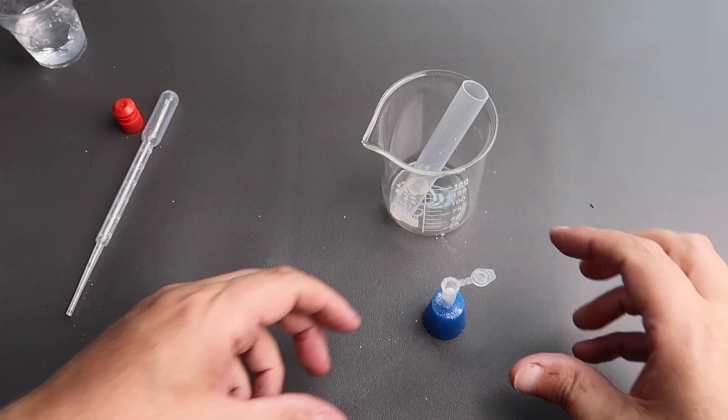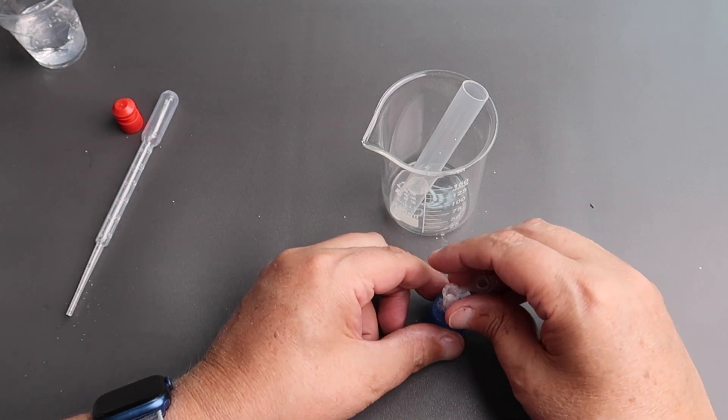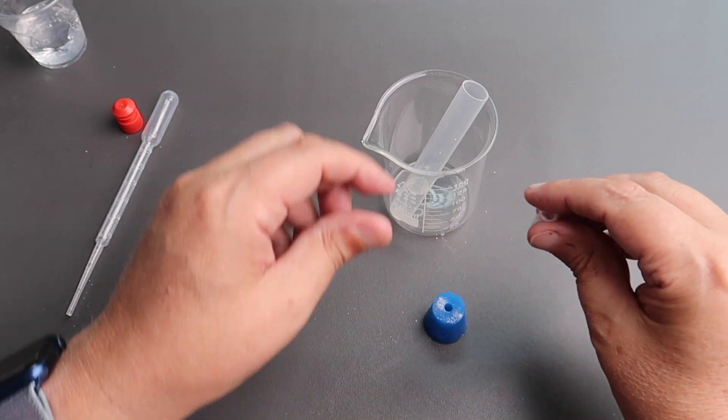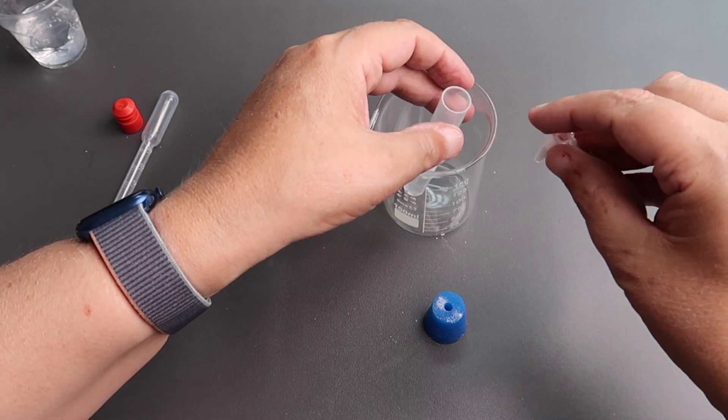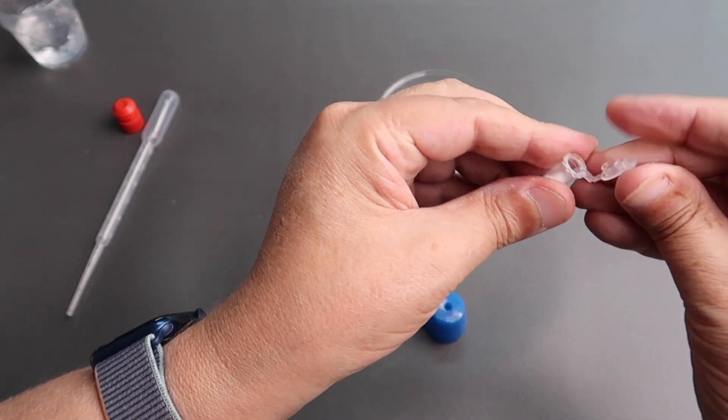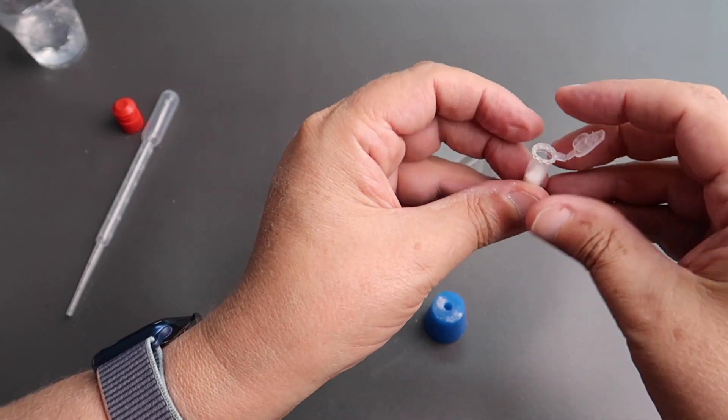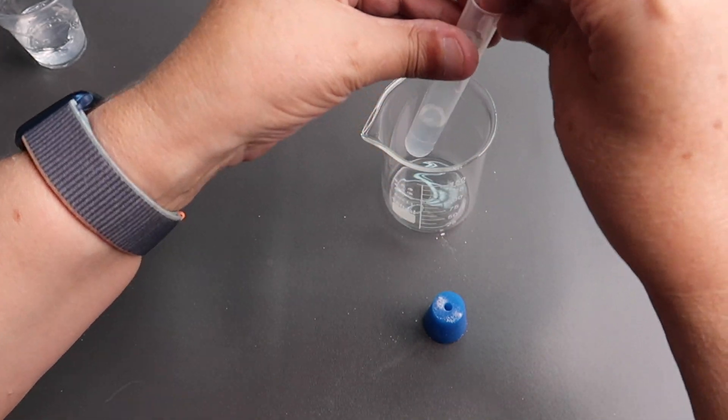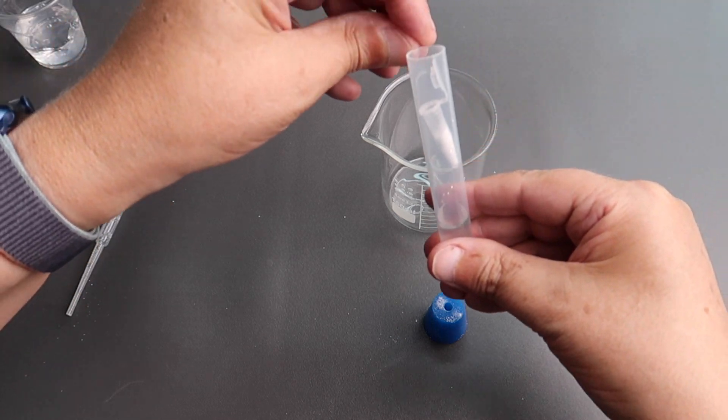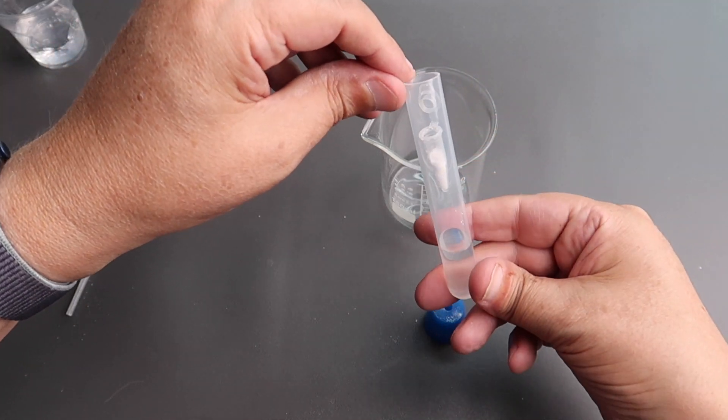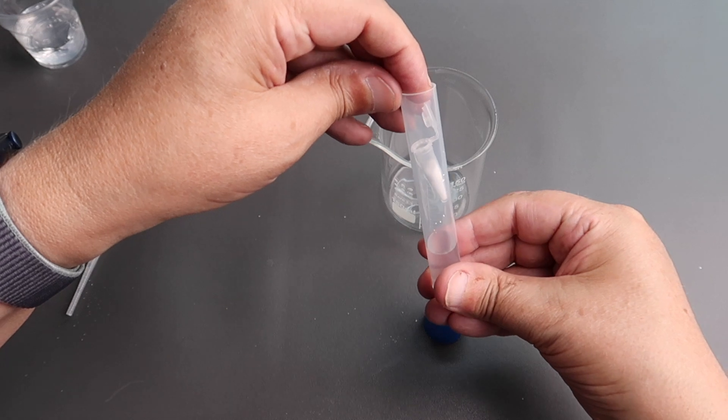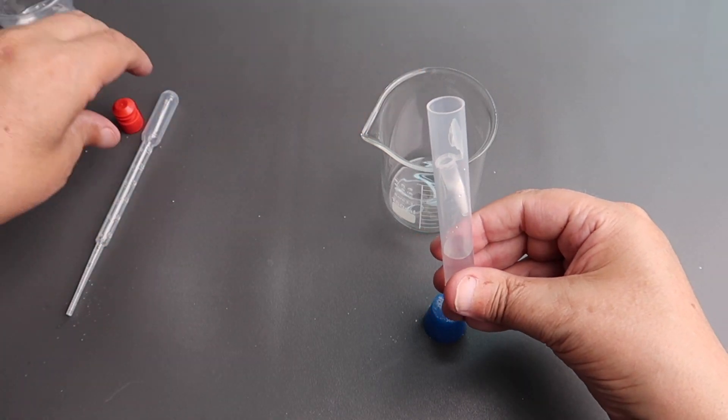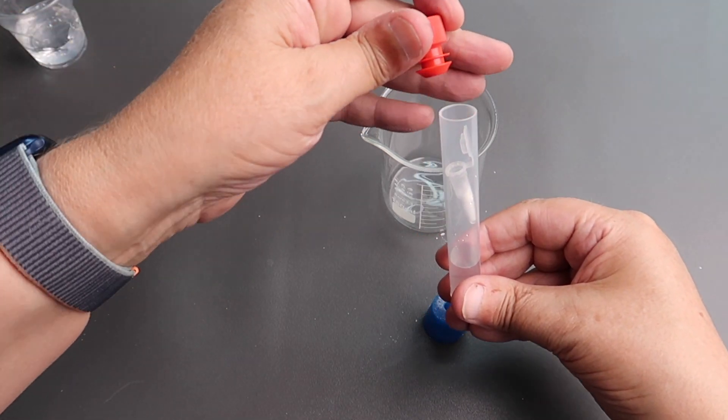Do not seal the top and carefully place it inside the test tube you put water in but don't let it touch the water. Just lodge it in the top. Then seal the top of the test tube.